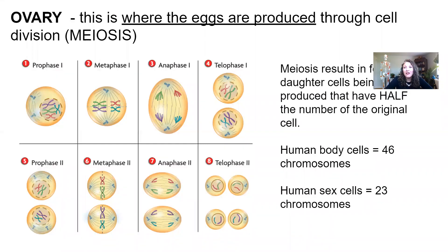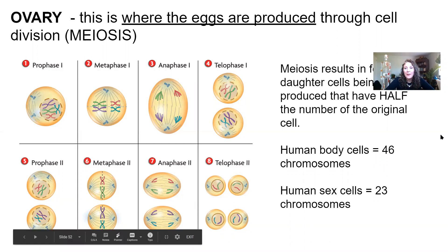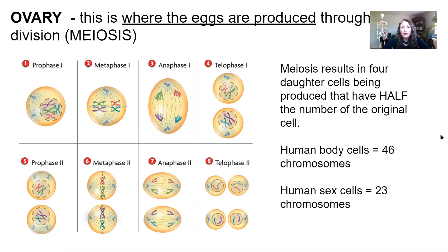The ovary is the place where eggs are produced, stored, and matured. This connects to our basic bio classes where we learned about meiosis. Normal somatic cell division is mitosis — the divisions that make your toes. Meiosis only happens in the ovaries and testes and produces gametes. Gametes are important because they have half the genetic information — they are haploid, meaning only 23 chromosomes, whereas normal somatic body cells have 46.